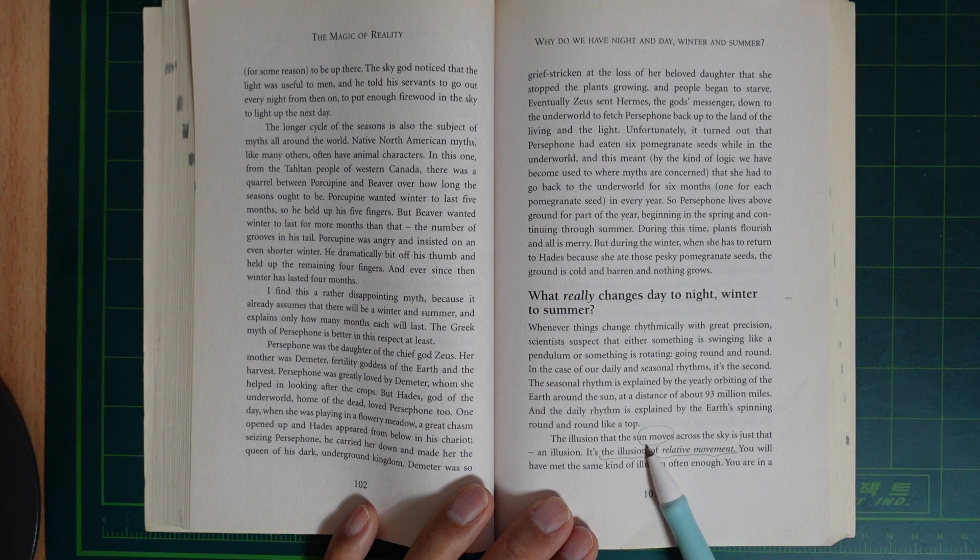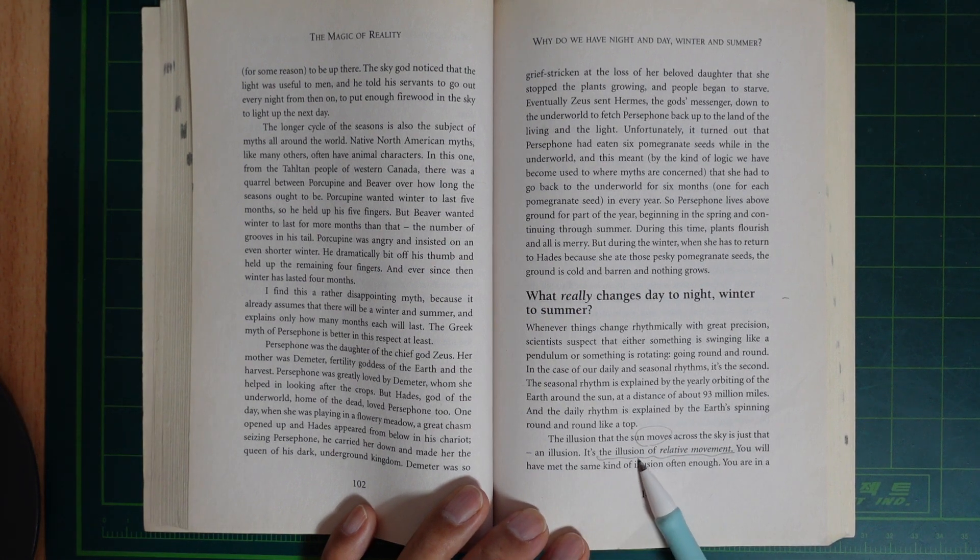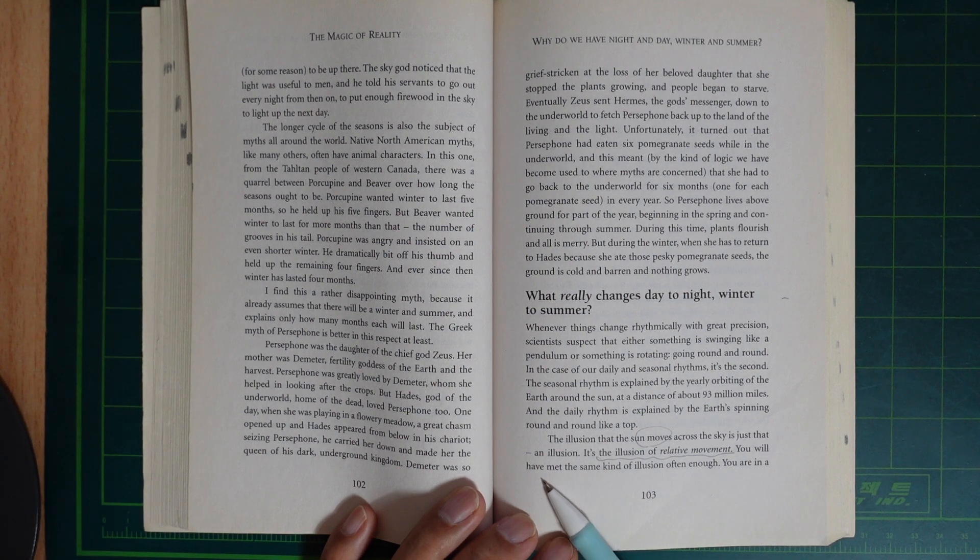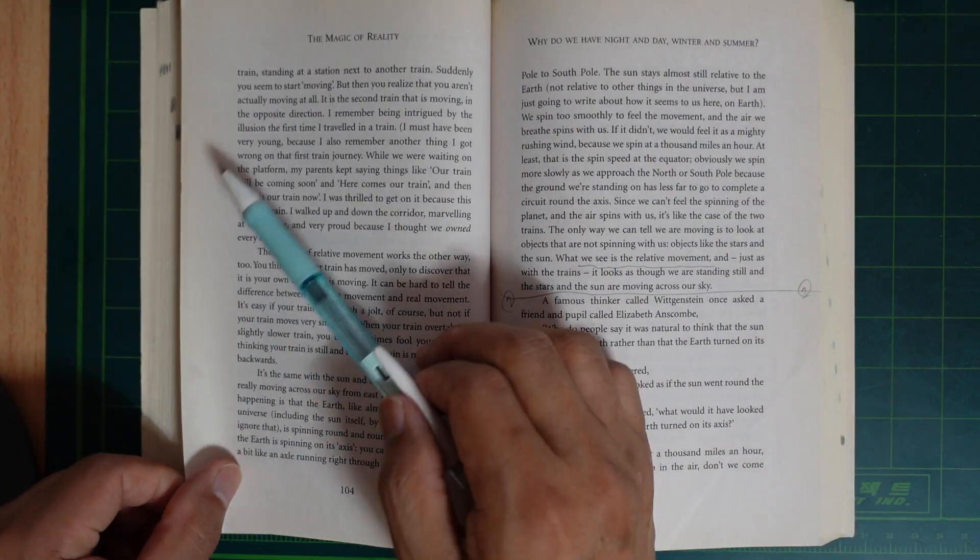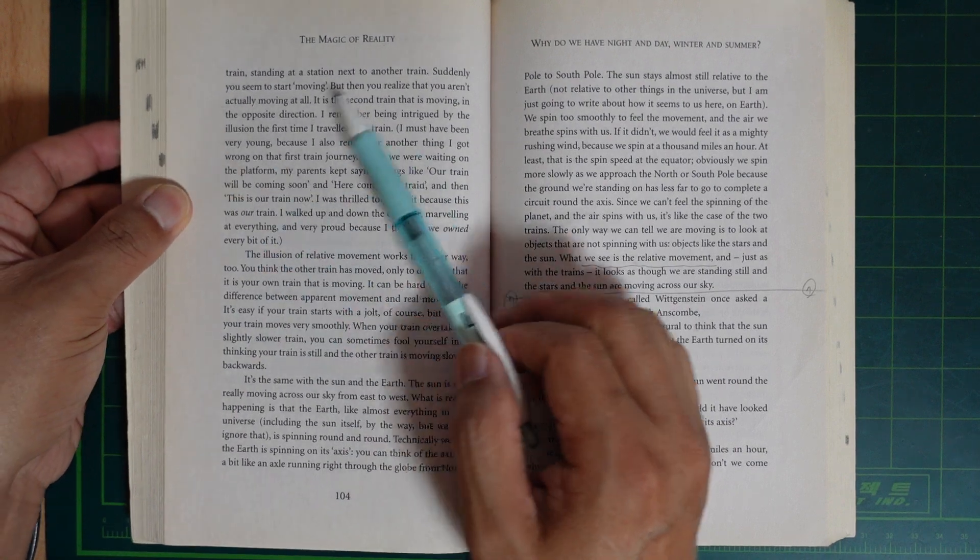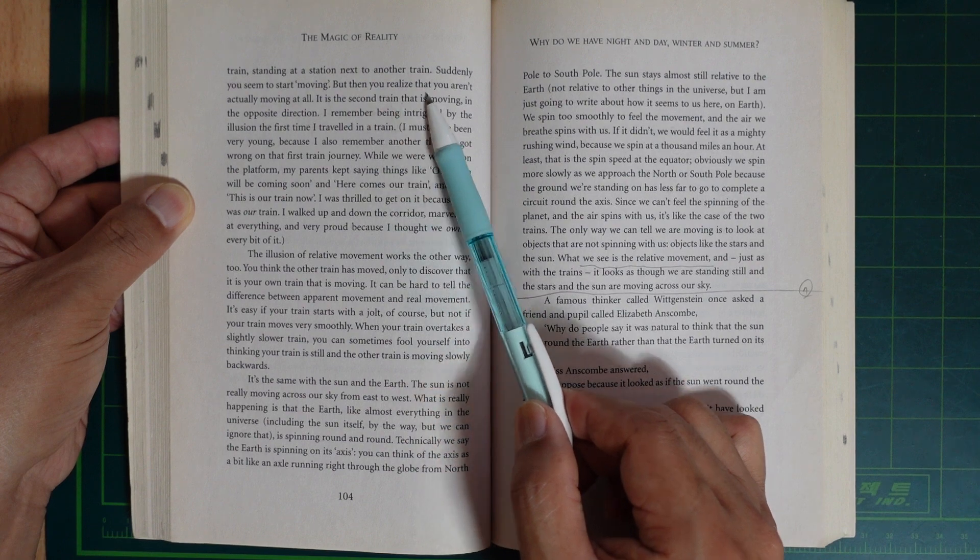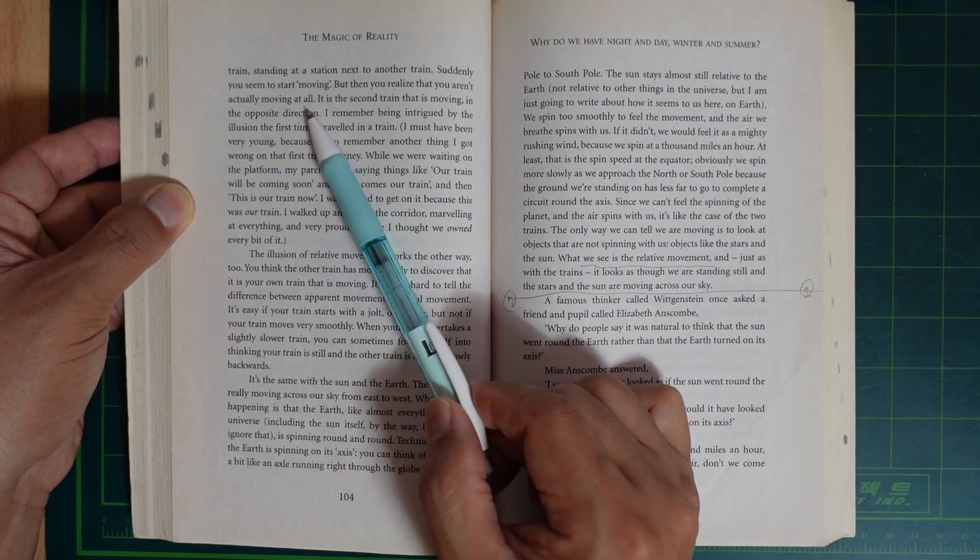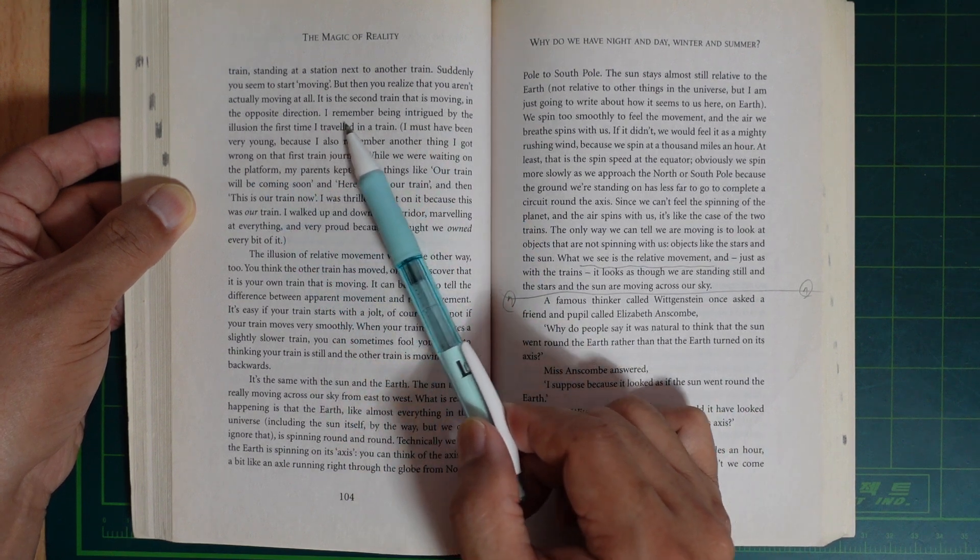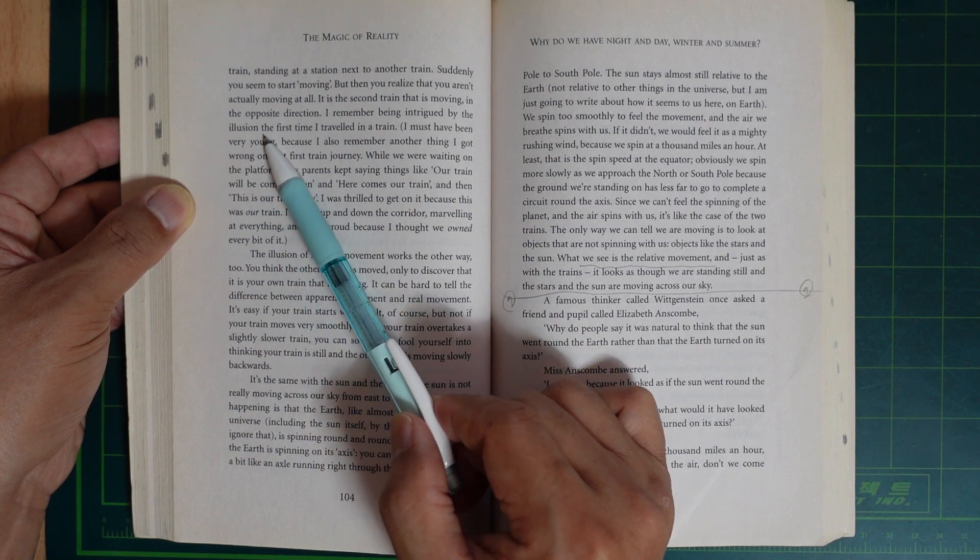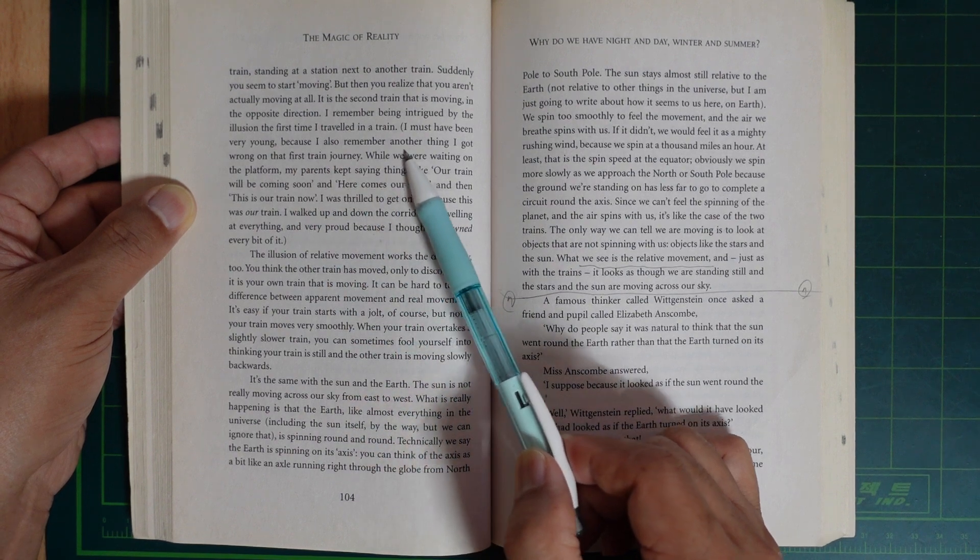The illusion that the sun moves across the sky is just an illusion. It's an illusion of relative movement. You will have met the same kind of illusion if you are in a train standing at a station next to another train. Suddenly you seem to start moving. But then you realize that you aren't actually moving at all. Rather the other train is moving in the opposite direction. I remember being intrigued by the illusion the first time I traveled in a train.